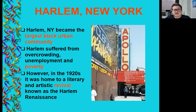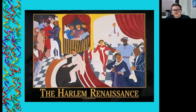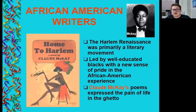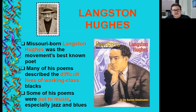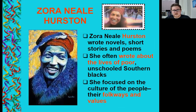Harlem, New York, became the largest Black urban community in the country. Harlem suffered from overcrowding, unemployment, and poverty, but in the 1920s it became home to a literary and artistic revival known as the Harlem Renaissance. The Harlem Renaissance was primarily a literary movement led by well-educated Black writers with a new sense of pride in African American experience. Claude McKay's poems expressed the pain of life in the ghetto. Missouri-born Langston Hughes was the movement's best-known poet — many of his poems described the difficult lives of working-class Black people, and some were put to music, especially jazz and blues. Zora Neale Hurston wrote novels, short stories, and poems, often about the lives of poor, unschooled Southern Black people, focusing on their culture, folkways, and values.